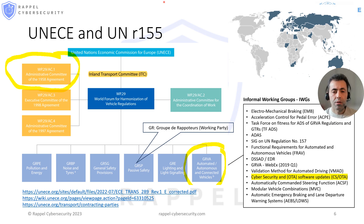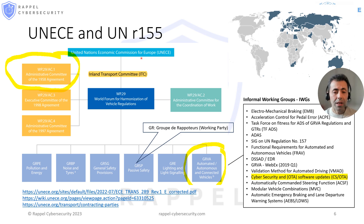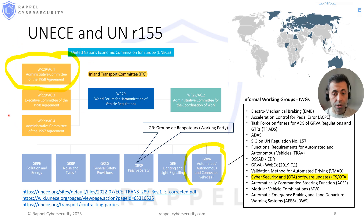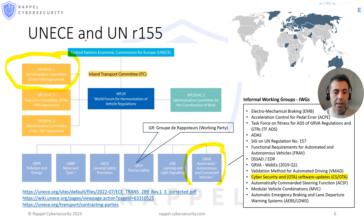The Inland Transport Committee, ITC, was set up in 1947 under UNECE to support the reconstruction of transport infrastructures in post-war Europe. Over the years, it has specialized in a harmonized and sustainable development of all modes of inland transport. WP-29 is one of the 18 working parties of UNECE under ITC, and its role is to work on three agreements: the 1958, 1998, and 1997 agreements. UNR 155 regulation adopts the 1958 agreement.